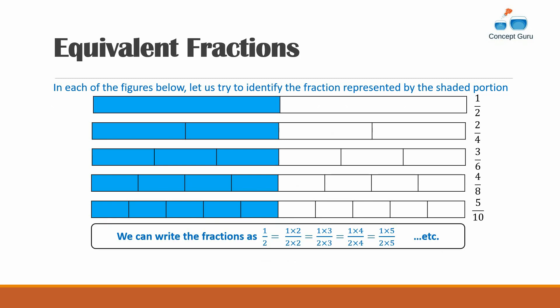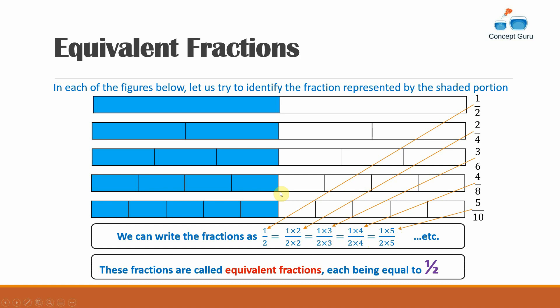We can write these fractions as: one over two equals one times two over two times two, which gives two over four. Similarly, three over six is one times three over two times three, four over eight is one times four over two times four, and five over ten is one times five over two times five. These are called equivalent fractions because each of them equals one half.